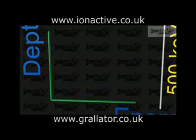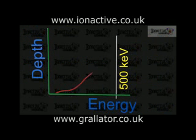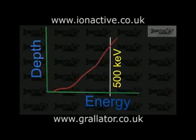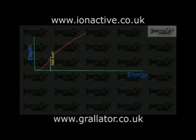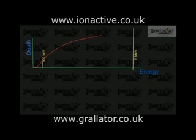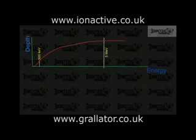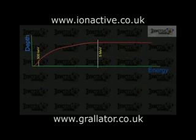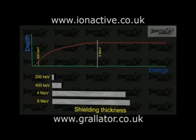Pair production has a significant impact on shielding requirements. It has previously been stated that as the photon energy increases, so does the penetration depth into a material. However, for sufficiently high energy photons, above about 5 MeV for lead, pair production becomes dominant. This effectively reduces incident photon energy to no more than 511 keV at the first scattering event, instead of allowing for a more continuous spectrum of scattered energies as seen with Compton scattering. Therefore, while thicker shielding is required for these higher energies, the fractional increase required is not as large as that seen for lower energy photons.